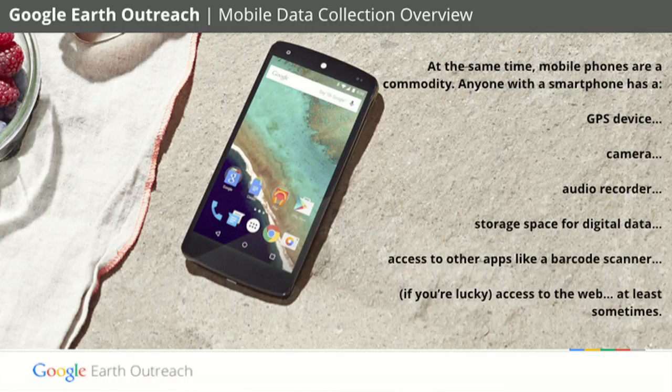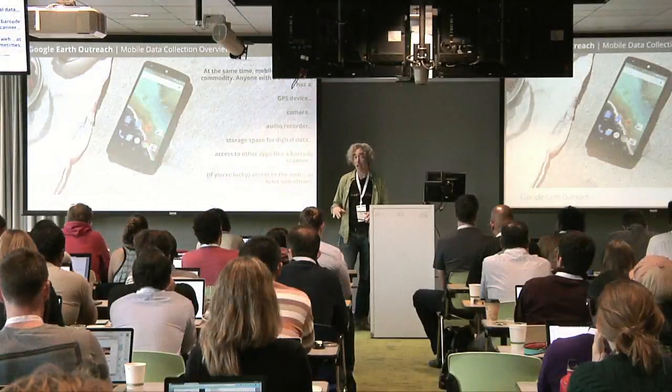Open Data Kit is an open source project that was started at the University of Washington and runs on Android phones. Rather than using paper, a camera, and a GPS to collect information, you can just use your Android device. The Android device — a cell phone or a tablet — has the camera built in, has a GPS, has barcode scanners, and lots of the tools you would use for data collection, all in one device. So you don't have to carry a bunch of different stuff around.